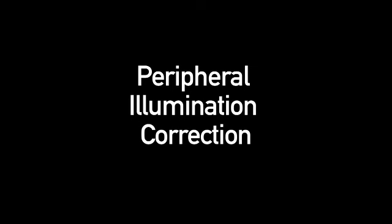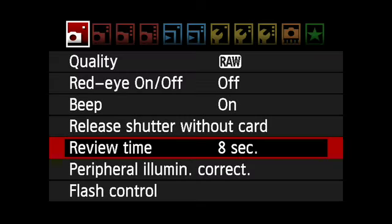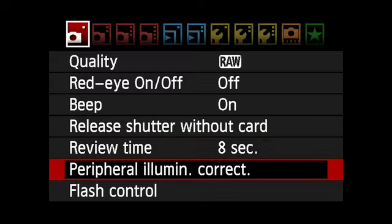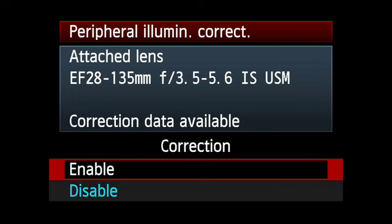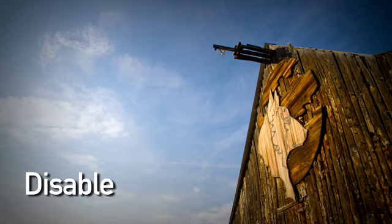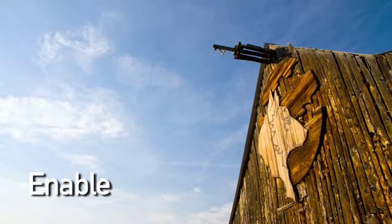Peripheral Illumination Correction helps reduce vignetting — the corners that appear darker than the middle of an image — especially at wide apertures. This setting applies a customized correction tailored to the exact lens and camera settings you're using in each shot.